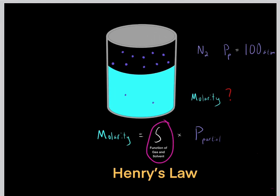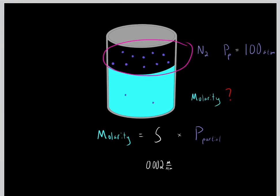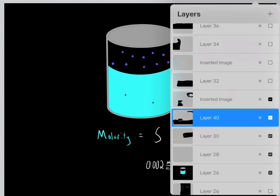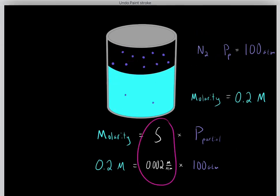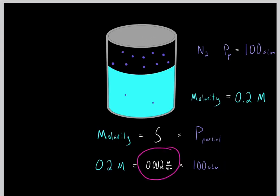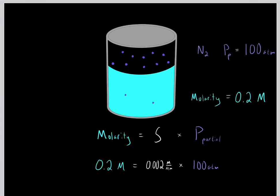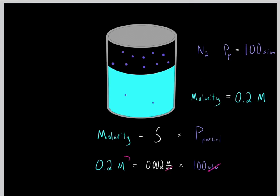This solubility constant is a function of the particular gas in that particular solution. For example, the solubility constant for nitrogen gas in water is 0.002 moles per atmosphere. So solving Henry's Law: 100 atmospheres multiplied by 0.002 molar per atmosphere gives us the molarity of nitrogen in the water solution. The atmospheres cancel and we're left with molarity.